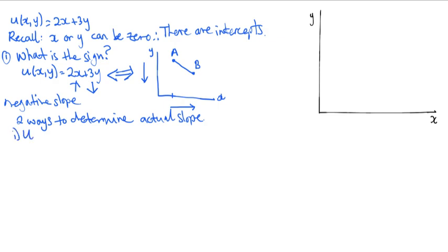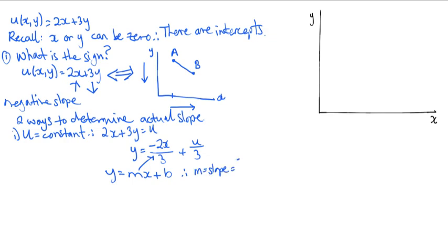One is to note that for any particular indifference curve, the utility is a given constant amount. We can write the equation as 2x plus 3y equals utility, u. Solving for y, we get y equals minus 2x over 3 plus u over 3. And then recalling the general formula for a straight line is y equals mx plus b, where m is the slope, we can see that the coefficient in our case is negative 2 over 3.